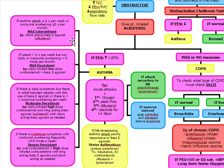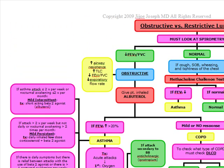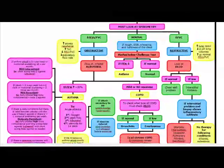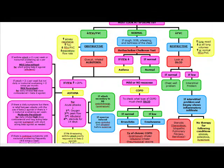To summarize asthma treatment: mild intermittent — short-acting beta-2 agonist only; mild persistent — low-dose corticosteroid plus beta-2 agonist; moderate persistent — high-dose corticosteroid with long-acting and short-acting agents; severe persistent — oral corticosteroid, high-dose inhaled corticosteroid, long-acting salmeterol, and short-acting as needed. That covers obstructive versus restrictive lung disease. Acute exacerbation of asthma will be covered in later videos.